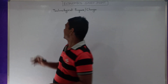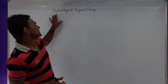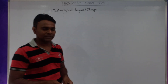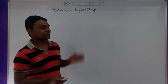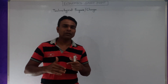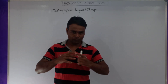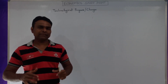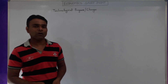Let us start the definition of technological progress or change. Technological progress is also known as technological change. Technological progress or change refers to the discovery of new and improved methods of production by which we can produce better goods or commodities and services at minimum cost.